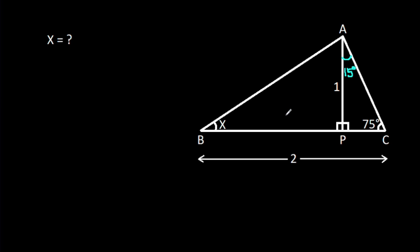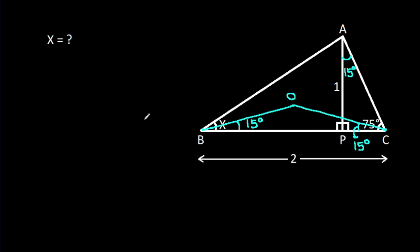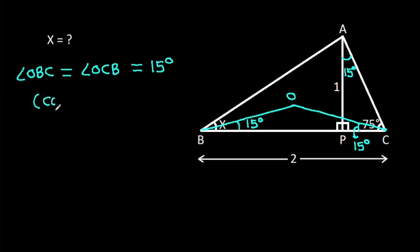From point B, if we make a line at an angle of 15 degrees, and from point C, if we make a line at an angle of 15 degrees, suppose this point is O. Angle OBC equals angle OCB, that is 15 degrees. This is our construction.